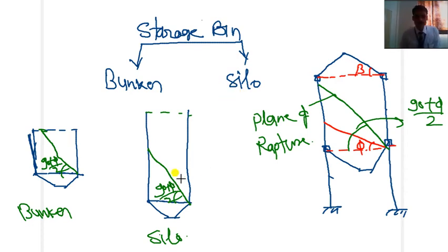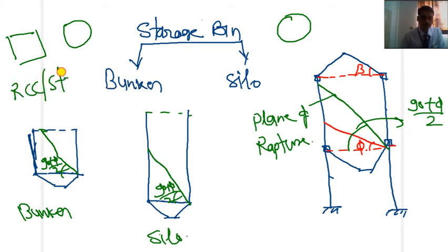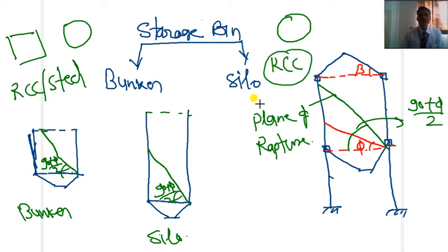The basic differences between bunker and silo are: first, height; second, plane of rupture; and third, their shape. Bunker may be constructed in rectangular or circular cross-section, but silos are generally constructed with circular cross-section. Regarding material, bunker may be constructed with RCC or steel, but silo is more suitable with RCC due to maintenance problems. RCC is more suitable for silos as compared to steel.